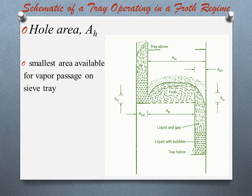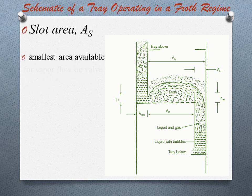Next is hole area, which is denoted by AH. This area is the total area of the perforations of the tray. The hole area is the smallest area available for vapour passage on a sieve tray.